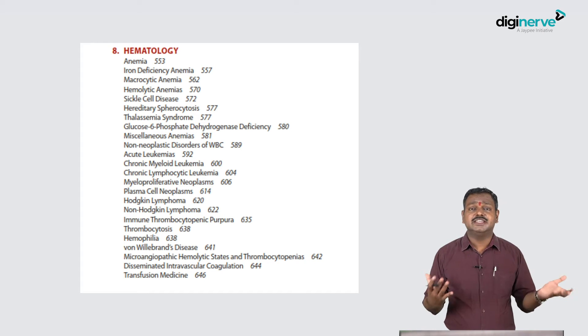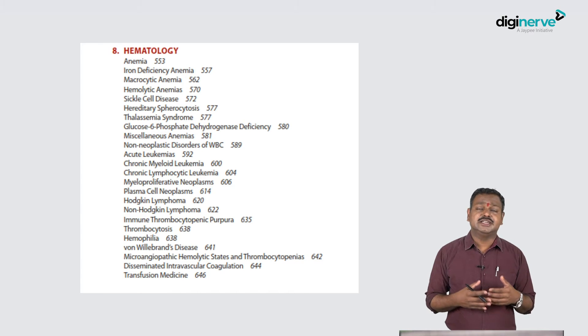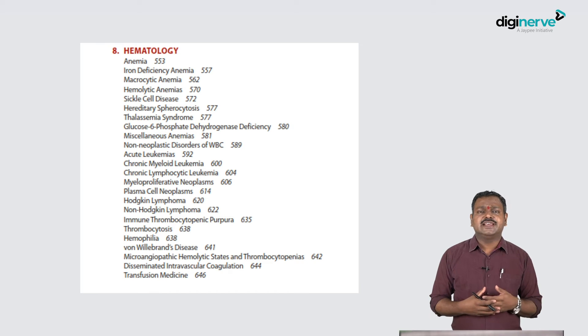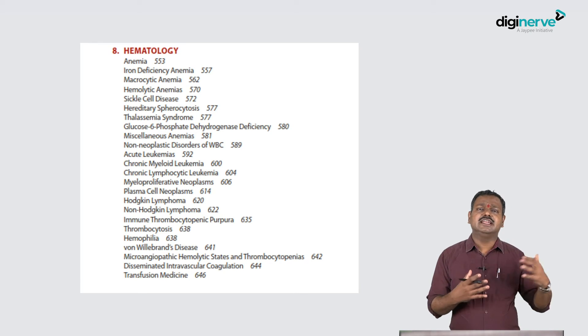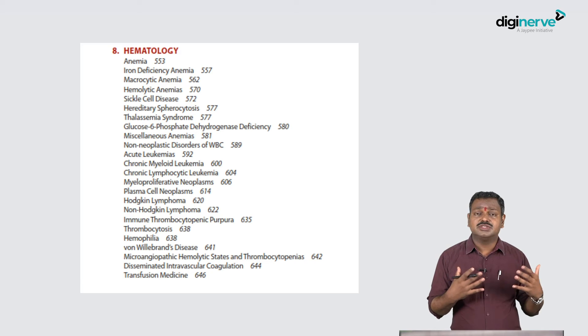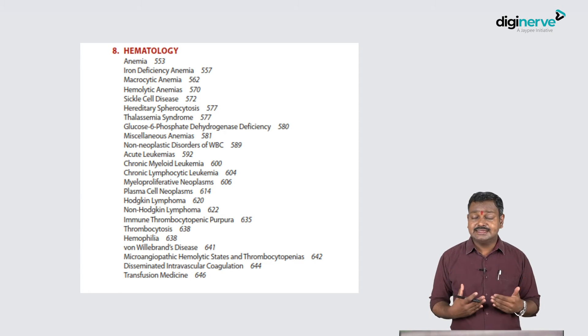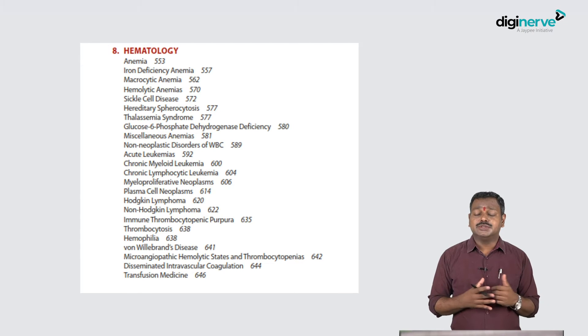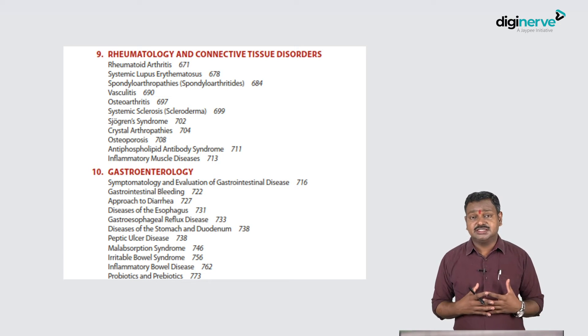Hematology is a very vast topic covering blood and blood-related disorders. Increases or decreases in blood components have various manifestations. Anemia is a very common disease encountered in day-to-day practice - you get a large number of anemia cases in exams. You must also know about blood cancers, clotting factor disorders, and their management. Rheumatological and connective tissue disorders are also common, especially in young females: rheumatoid arthritis, lupus, spondyloarthropathies, and vasculitis.